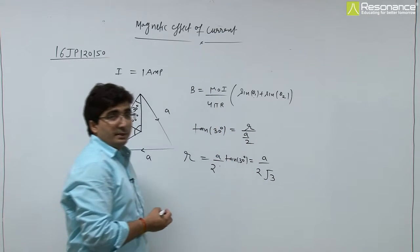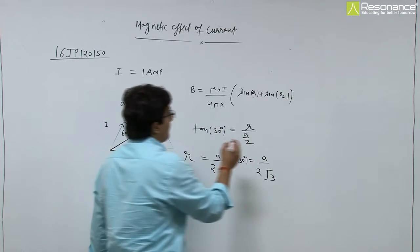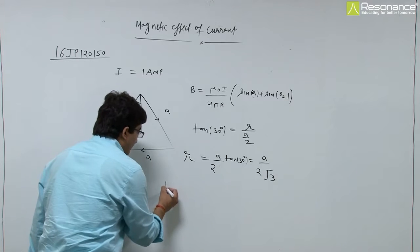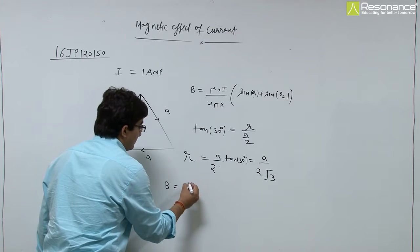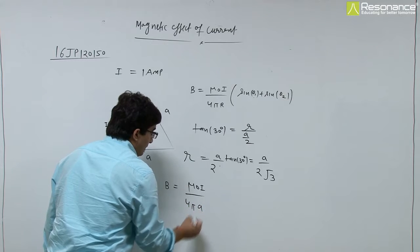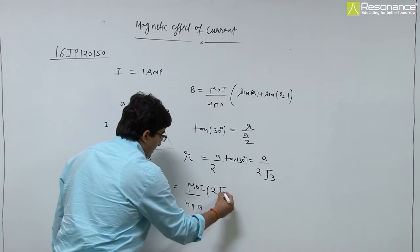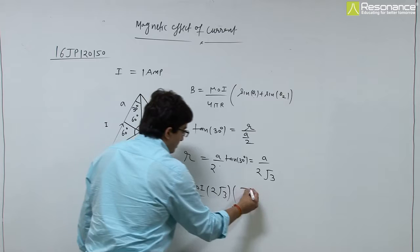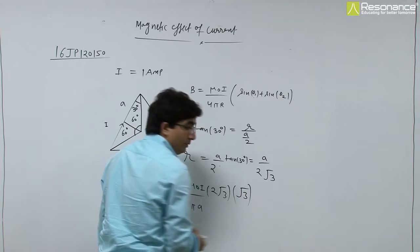We can substitute this here, and θ₁ and θ₂ are both 60 degrees. So the magnetic field due to one wire equals μ₀I/(4π · a/(2√3)) times √3/2 times 2.